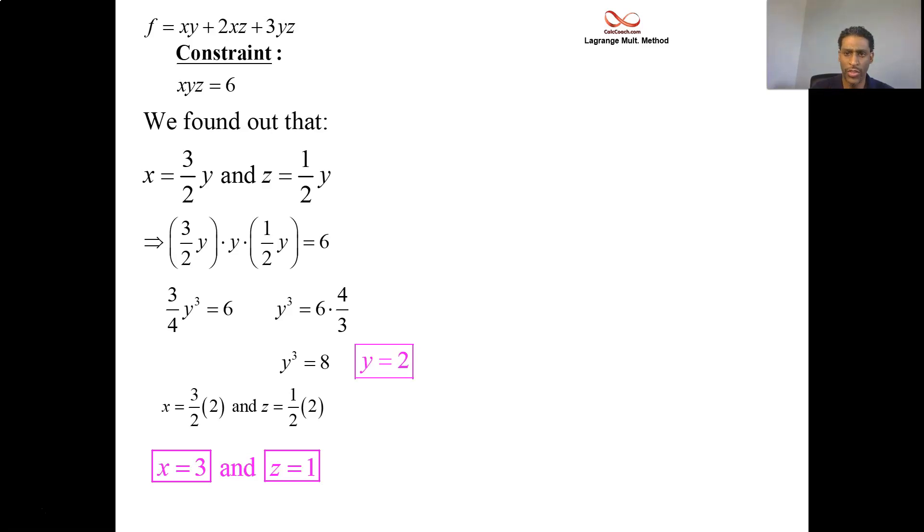One point came out of Lagrange. Only one. Which leads to one output value. If x is 3 and y is 2 and z is 1 into your function, the product of x and y is 6. The product of x and z is 3. Double that, you get another 6. The product of y and z is 2. Triple that, you get another 6. And three of those guys added up to give you 18. But how do we know that this is the minimum? We were told to minimize this function. Usually Lagrange will spit out two different values. And then you know. Biggest is max. Smallest is min. But here Lagrange is only spitting out one value. So how do you know?